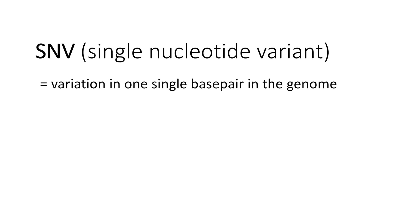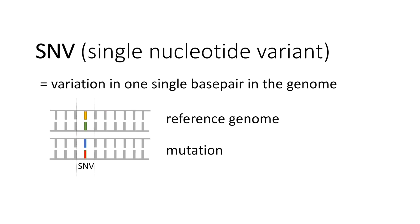What are SNVs? SNVs are single nucleotide variants — variations that occur in only one single base pair in the genome. Here we see the reference genome and a mutation below: that is a point mutation occurring in one single base pair, and this is an SNV, a single nucleotide variant.